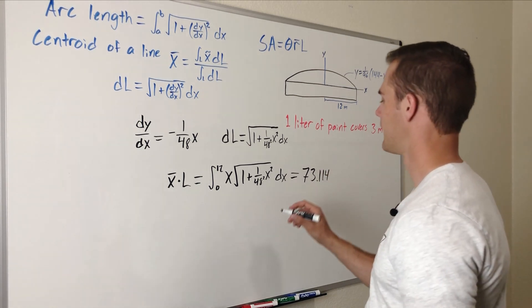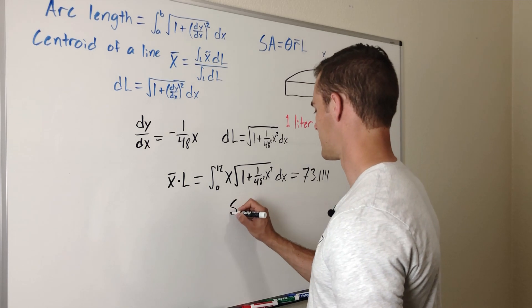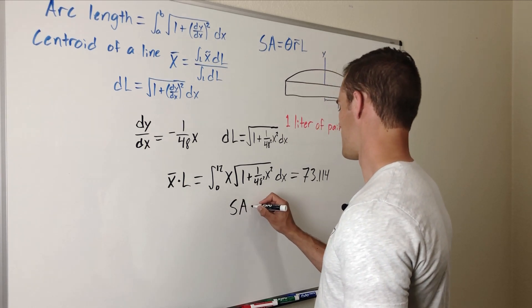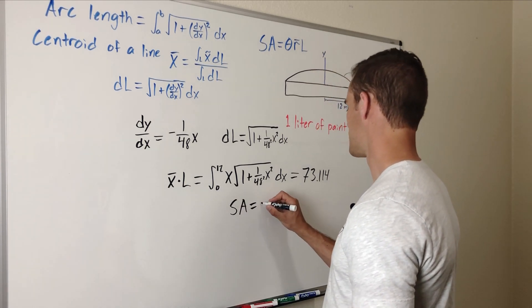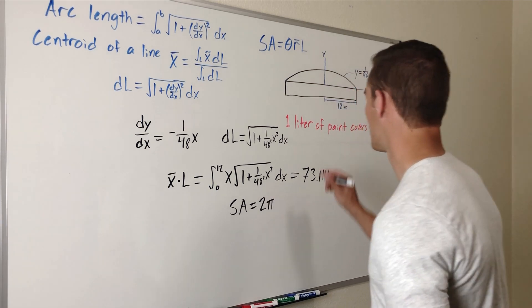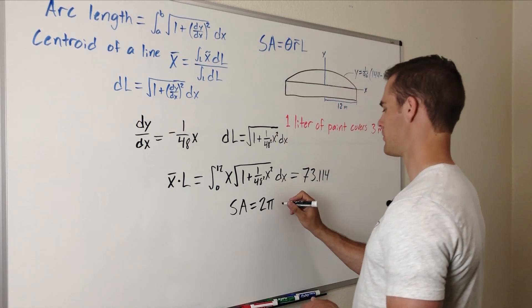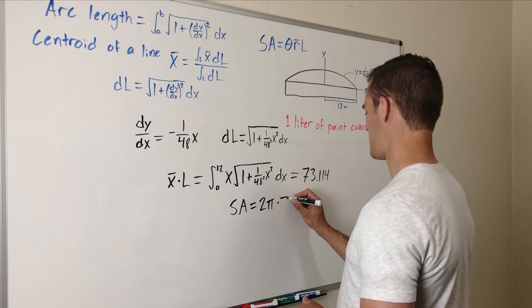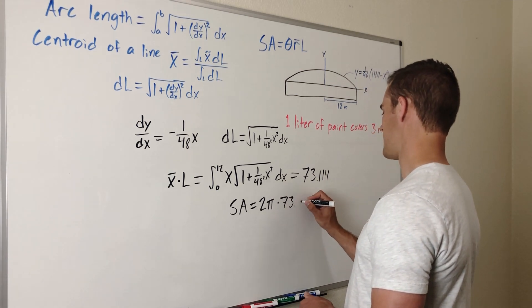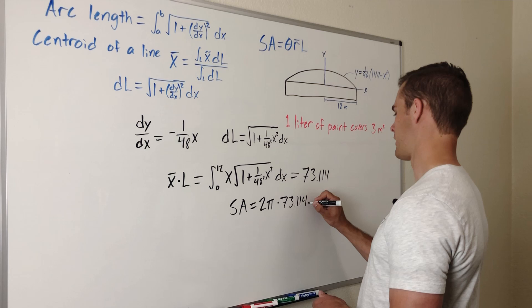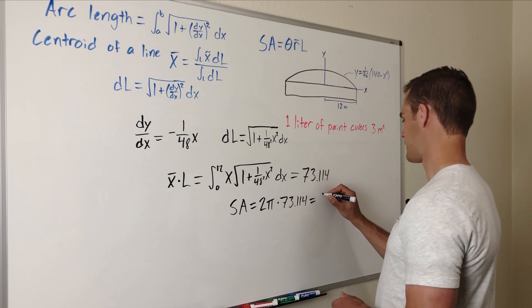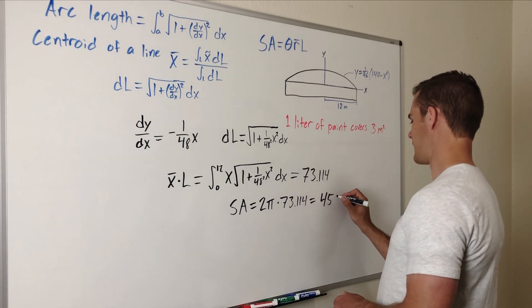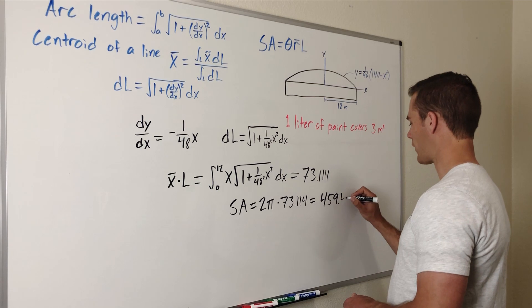And then so our surface area equation is going to be theta which is 2 pi because we are rotating it a full 360 degrees that's 2 pi radians multiplied by 73.114 and that equals 459.4.